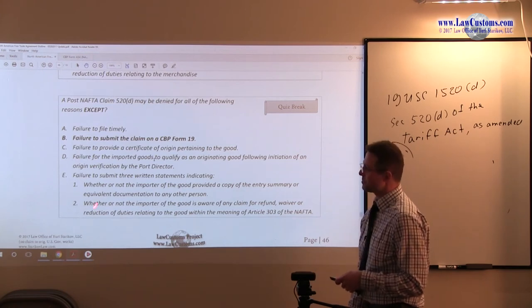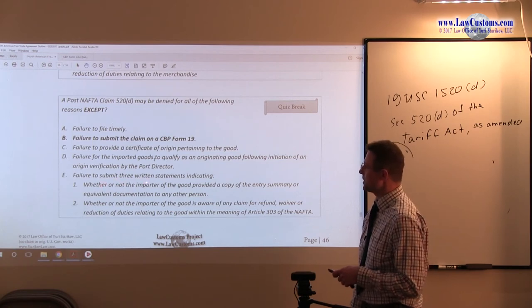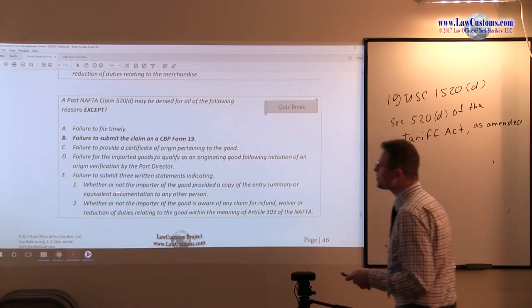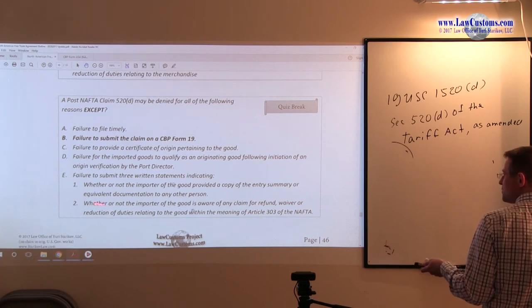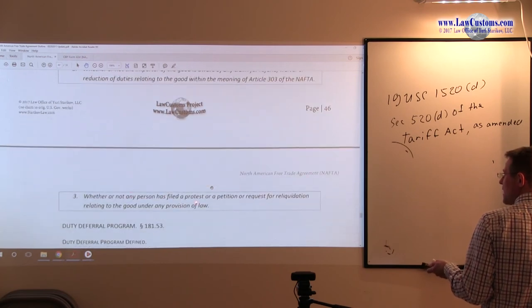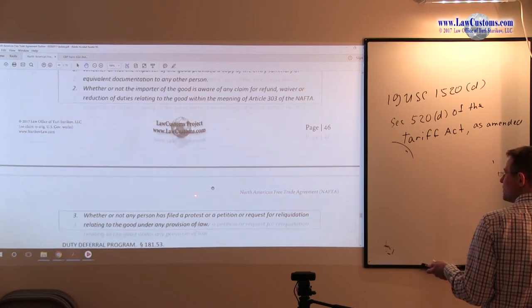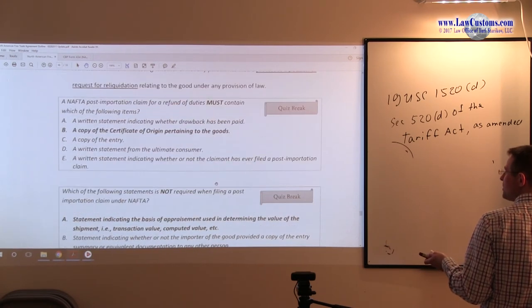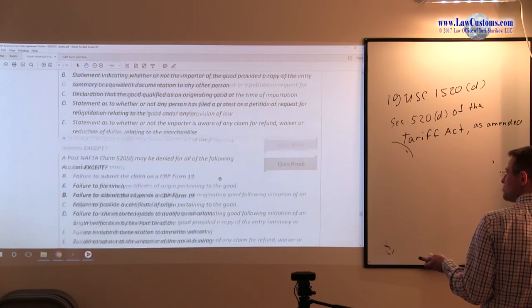Interesting way how Customers Examiner's put it, break it down in 1 and 2, but let's move on. Failure to submit three written statements. So three statements indicating the following. Whether or not the importer of goods provided the copy of entry summary. Whether or not the importer of goods is aware of any claim for refund. And whether or not the person has filed a petition, a protest or a petition for a liquidation. So first one is copy of the entry summary. Copy of entry summary is available over here. So it's a must under the procedural requirement. So this one is okay.